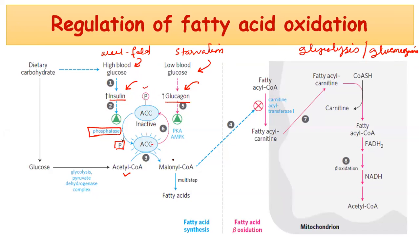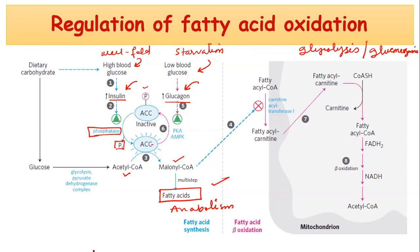Acetyl-CoA carboxylase converts Acetyl-CoA into Malonyl-CoA. This Malonyl-CoA is an intermediate for fatty acid anabolism. So we can say that insulin promotes fatty acid anabolism by activating this pathway.